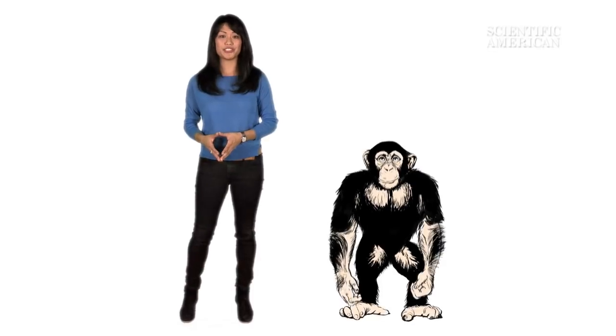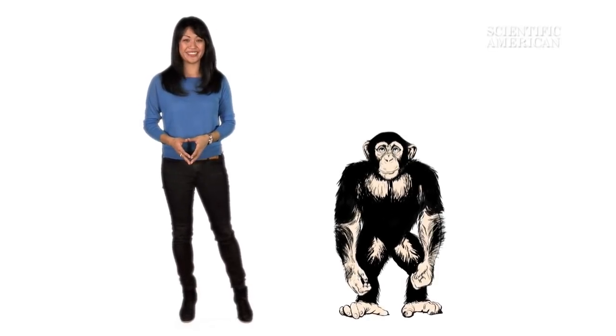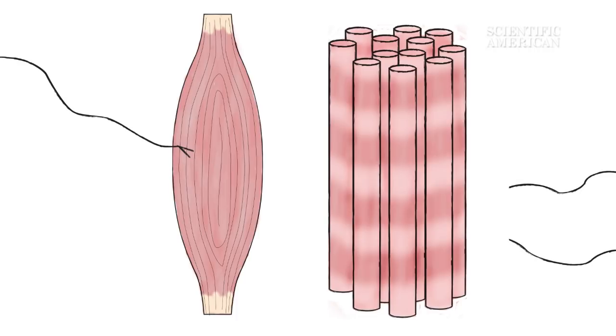And these are used for gross motor skills, like jumping and climbing. Some neurons contact only a few fibers, making a small motor unit.